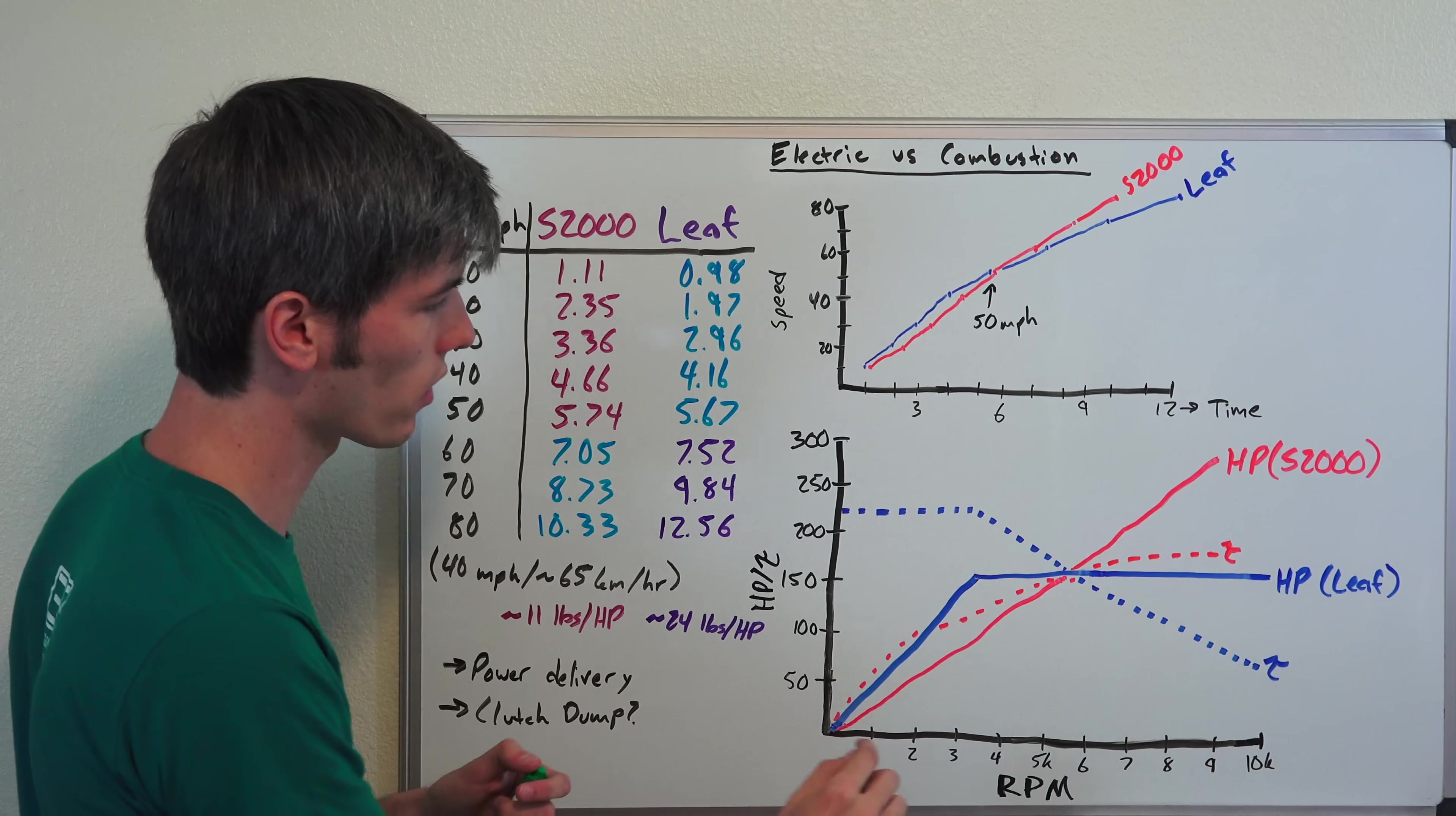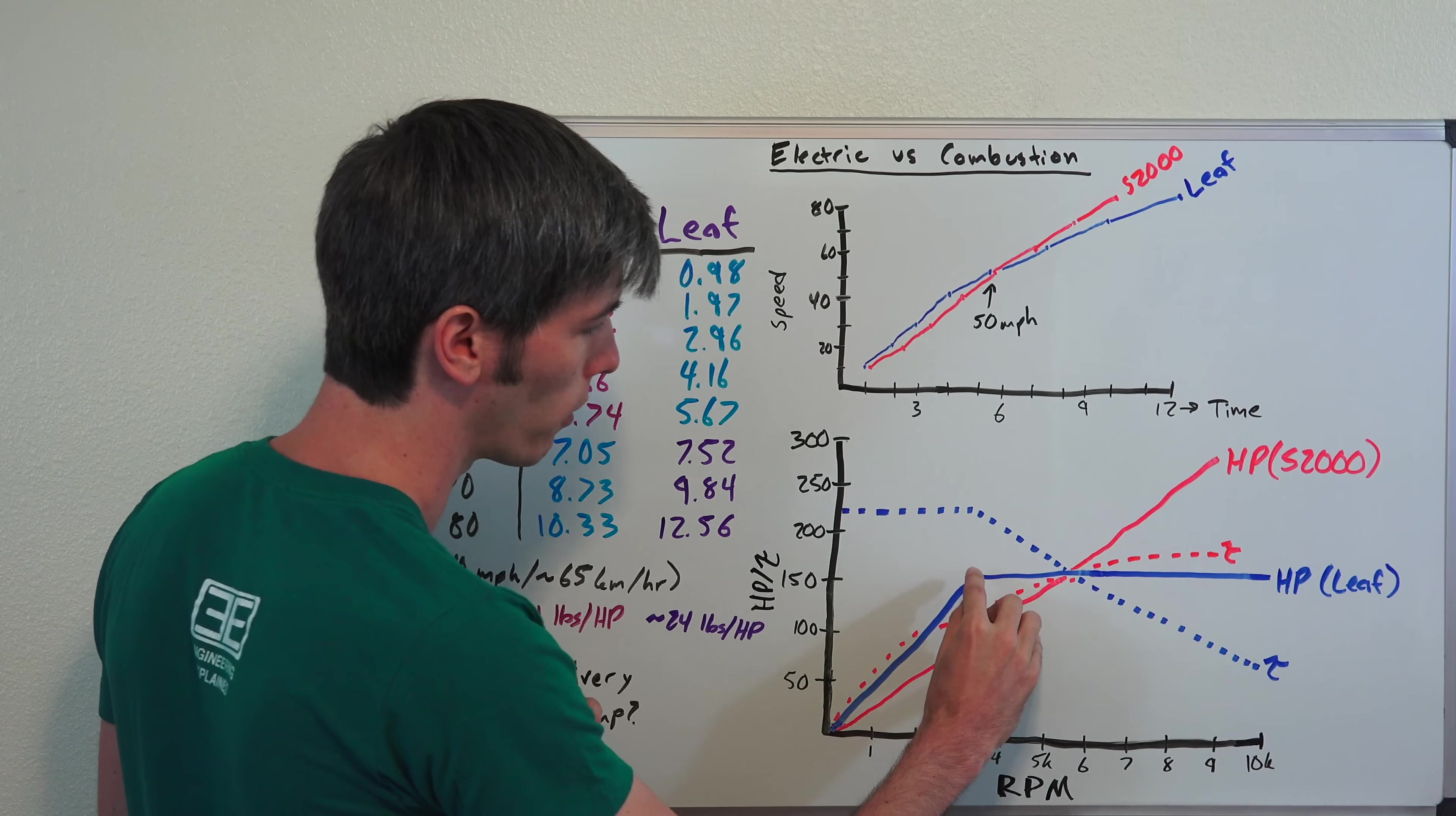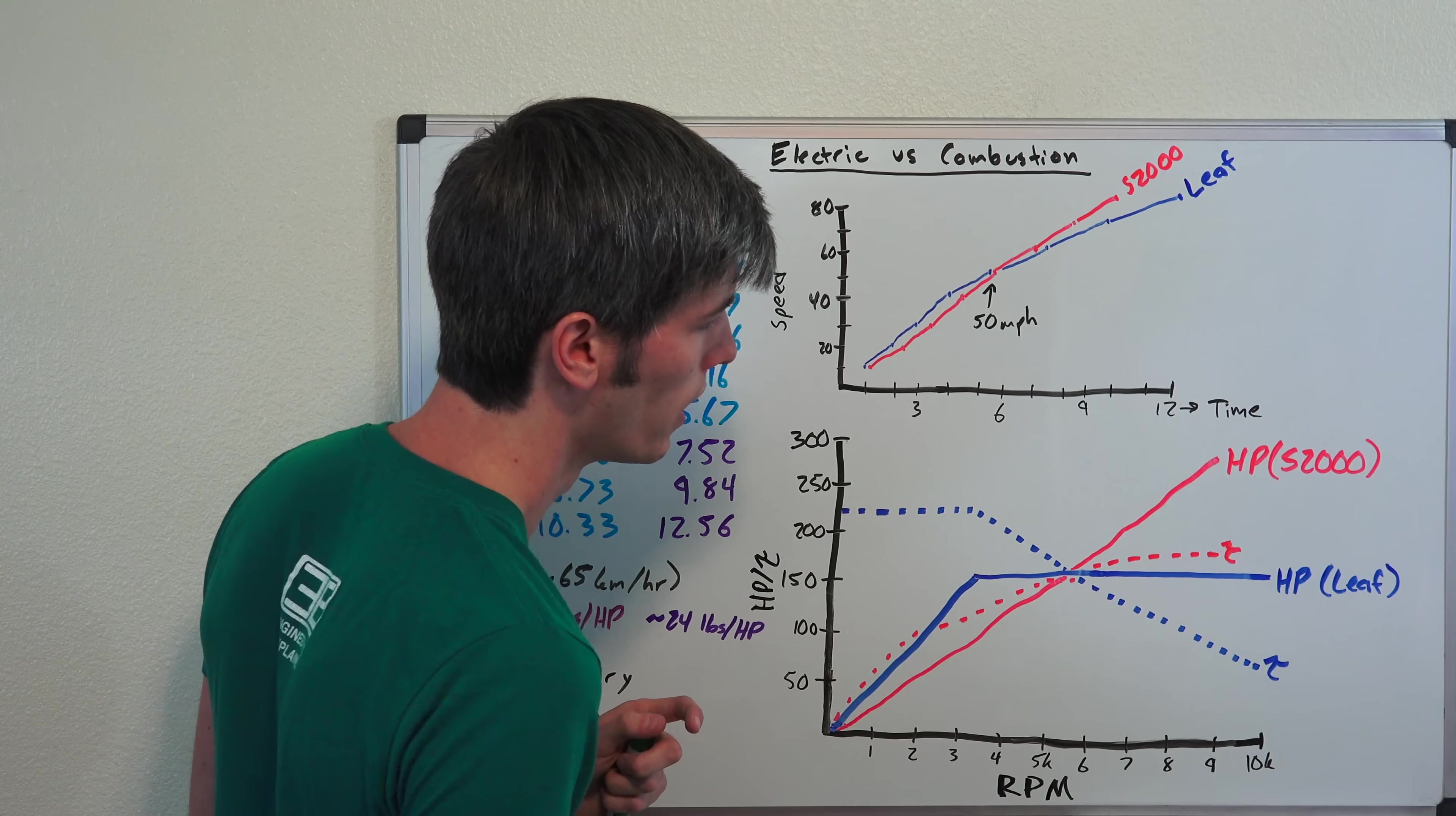So here looking at this torque and horsepower curve, the dotted line represents torque, in blue is the Nissan Leaf, the solid line is horsepower, and in red is the S2000. The Nissan Leaf's torque curve starts at peak torque, 236 pound-feet, right from zero RPM all the way to about 3300 RPM, where the vehicle reaches peak power of 147 horsepower and then flat-lines that power until about 10,000 RPM. With the S2000, you have that torque curve build up and your horsepower curve build up as well, basically continuously in almost a straight line up until about 9,000 RPM where it's at 265 horsepower.